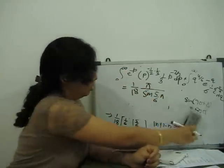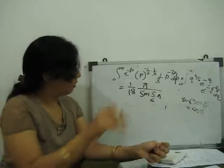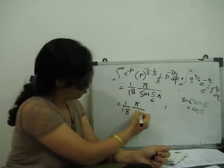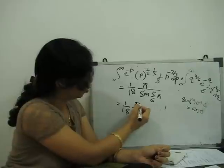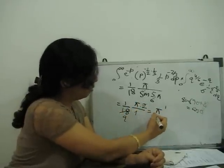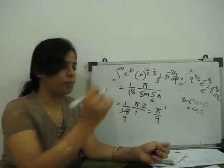So sine 5 by 6 equals 1 by 2. Pi upon 1 by 2. The 2 comes here. Cancel the 9. So our answer is pi by 9. Clear.